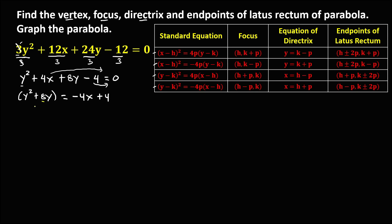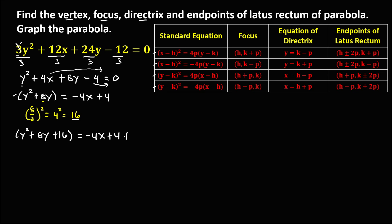We can now apply completing the square for y. Take the coefficient 8, divide by 2, and raise to the power 2: 8 divided by 2 is 4, and 4 squared is 16. We need to add 16 to both sides of the equation. So this becomes y squared plus 8y plus 16 equals negative 4x plus 4 plus 16.